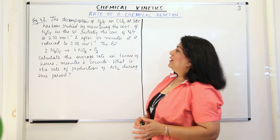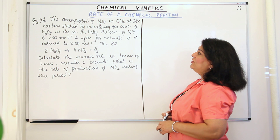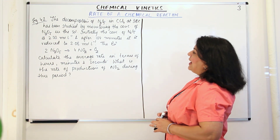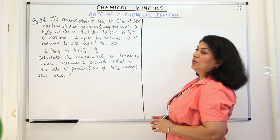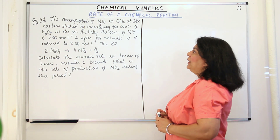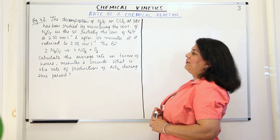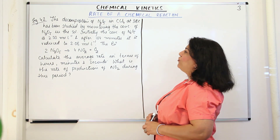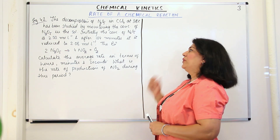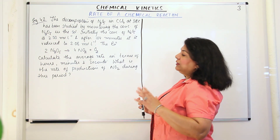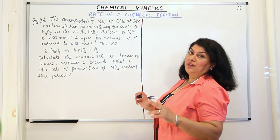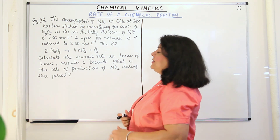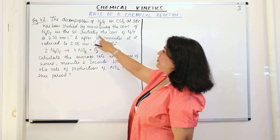I'll read the question straight away. The question says that the decomposition of N2O5 in carbon tetrachloride at 318 Kelvin has been studied by monitoring the concentration of N2O5 in the solution. Initially the concentration of N2O5 is 2.33 moles per liter, and after 184 minutes it is reduced to 2.08 moles per liter. So the initial and final concentrations of the reactant, R1 and R2, have been given, and instead of T1 and T2, delta T is given directly.